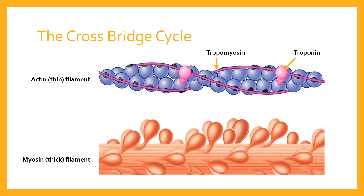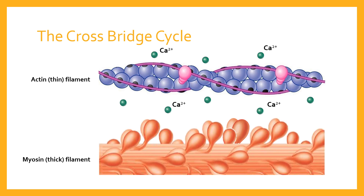What's most important in terms of the cross bridge cycle is the consequence of that electrical impulse arriving at the muscle. It causes calcium ions to flood from the network of tubes around the outside of the muscle cell — called the sarcoplasmic reticulum — into the fluid contained within the muscle cell. The sarcoplasmic reticulum is full of calcium ions, and when an electrical impulse arrives at it, it releases those calcium ions into the muscle cell itself.